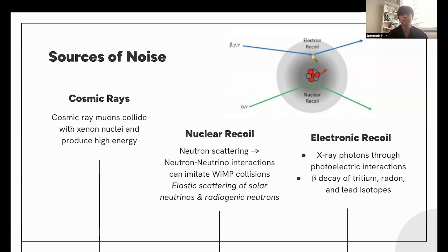The elastic scattering of solar neutrinos and radiogenic neutrons produce an extremely high concentration of free neutrons, and that can also emulate WIMP collisions. Electronic recoil through X-ray photons introduced by photoelectric interactions, and the beta decay of tritium radon and lead isotopes can produce electronic recoil signals that scientists may confuse for WIMP collisions.